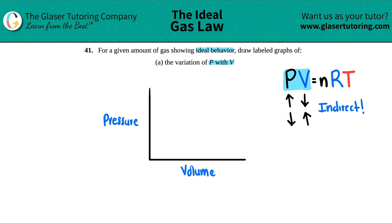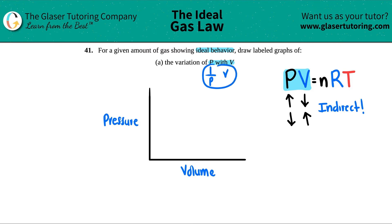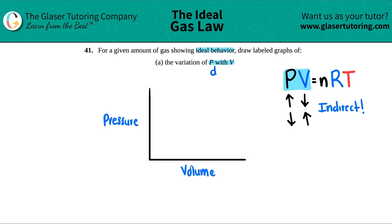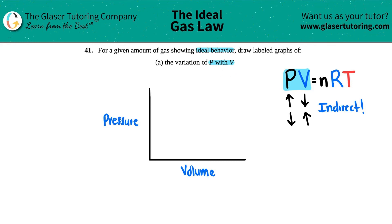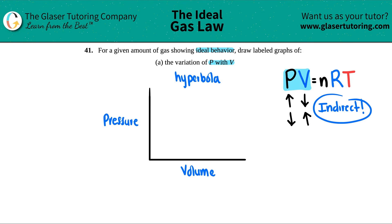They're asking about pressure and volume directly — not one over P versus V — so this is showing an indirect relationship. If we wanted a linear graph, we would need a direct relationship. But since the relationship here is indirect, and the axes are just P and V, you're not going to get a linear line. You're going to get a hyperbola.